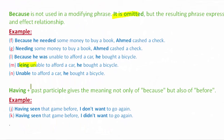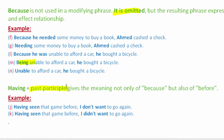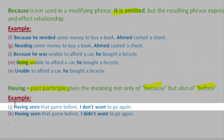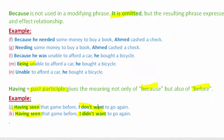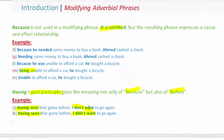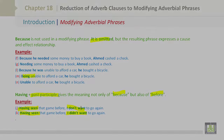Let's move on to 'having plus the past participle.' This gives the meaning not only of 'because' but also of 'before.' For example: 'Having seen that game before, I don't want to go again,' or 'Having seen that game before, I didn't want to go again.'